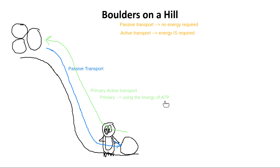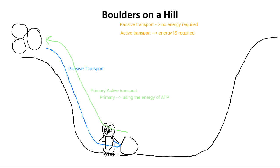If this poor penguin pushed this boulder all the way up the hill, it would be exhausted — that takes a lot of energy. But our penguin is smart. It notices that on the other side of the valley there's a bunch of boulders up high too. The penguin thinks: if I could somehow get one of those boulders to knock into this one, it might push it up the hill.